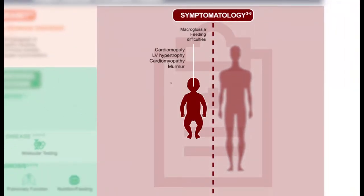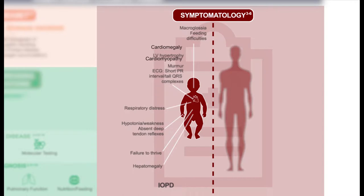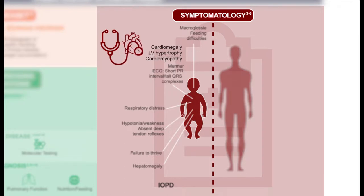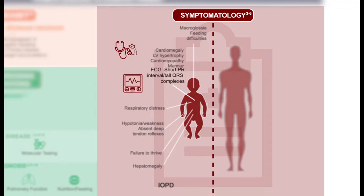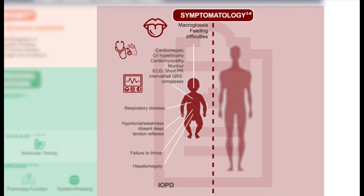Regarding symptoms for infantile-onset Pompe disease, cardiomyopathy is a distinguishing characteristic. There is also left ventricular hypertrophy, and frequently on exam this is picked up via a murmur. The EKG findings in IOPD are characteristic: there is a short PR interval and tall QRS complexes, which is an important finding that can increase the level of clinical suspicion.